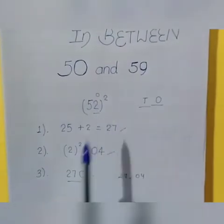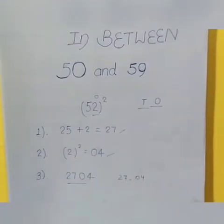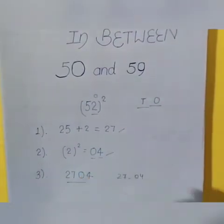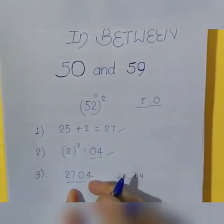Then, for the ones place, we will find the square. When we find the square, remember to write the ones and the tens place, and then we will combine the results.